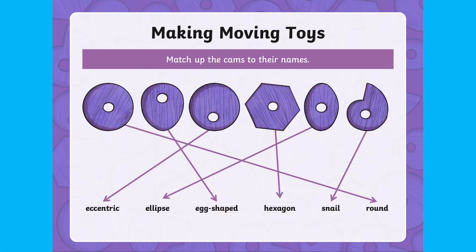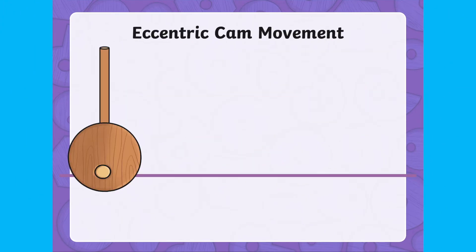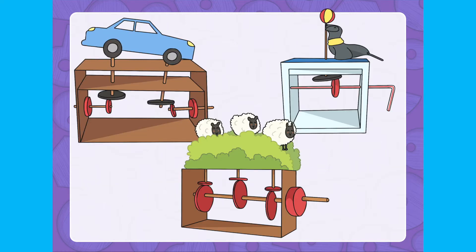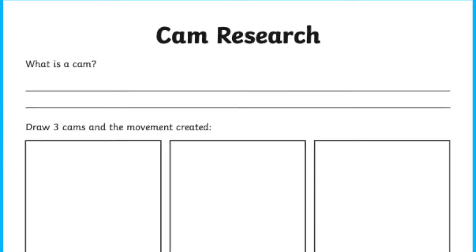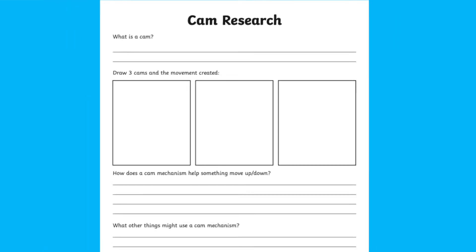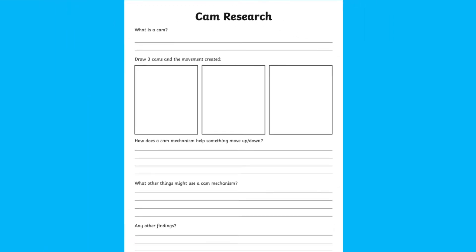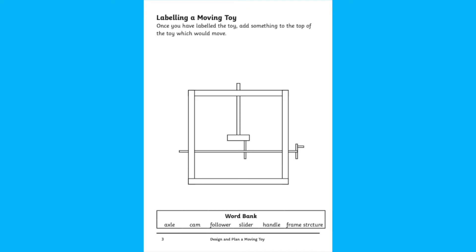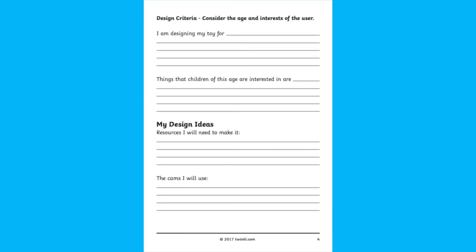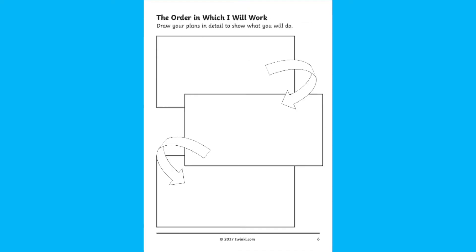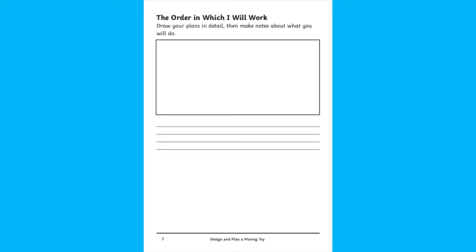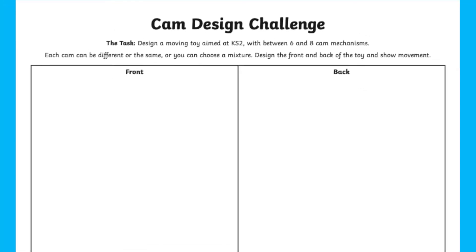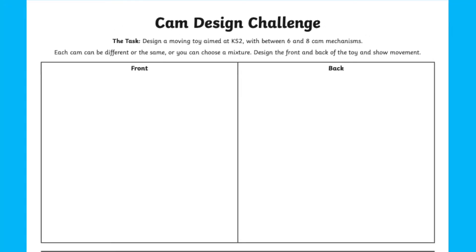This is a basic way to make a moving toy, and this lesson pack is a fantastic starting place for any mechanism project. This lesson pack includes a research sheet and a plan, design and evaluate booklet which covers each stage of making a moving toy. It also includes a design challenge sheet which challenges your child to design a moving toy which has between six and eight mechanisms.